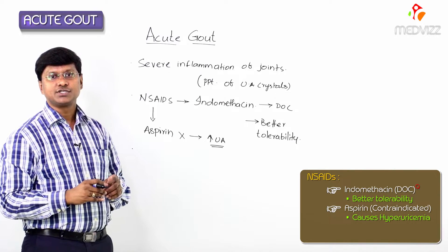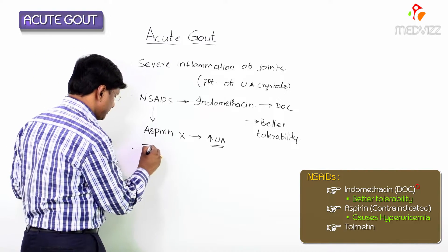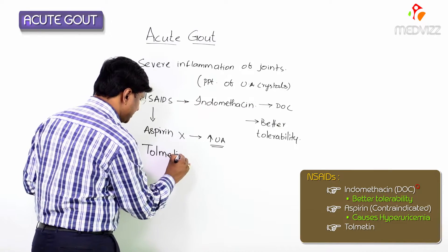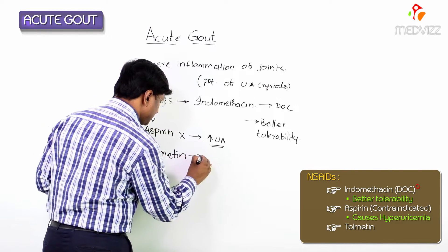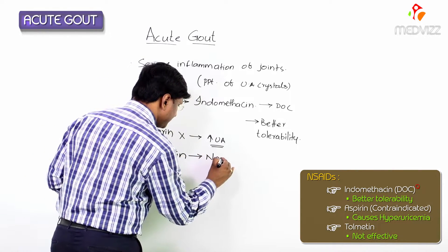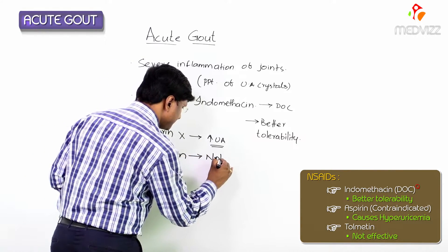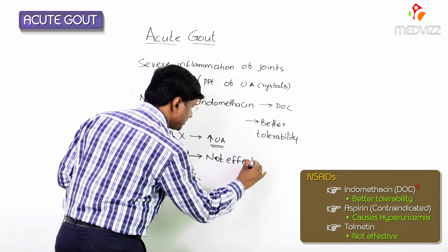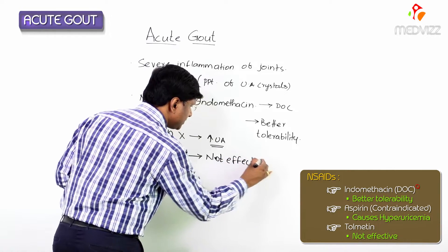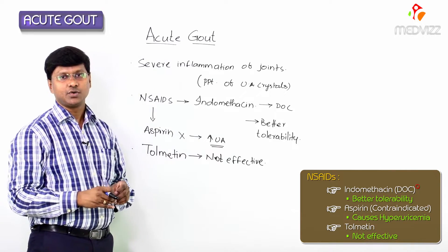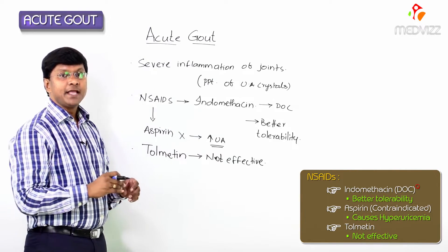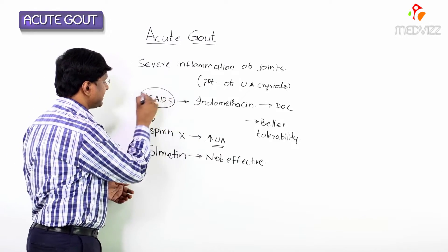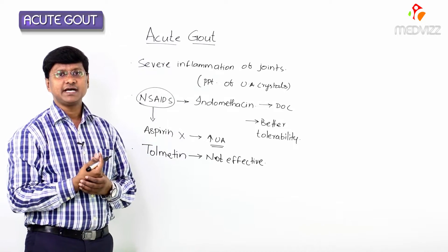Tolmetin is also an NSAID, but tolmetin is not effective in the treatment of gout or the acute gouty attack.